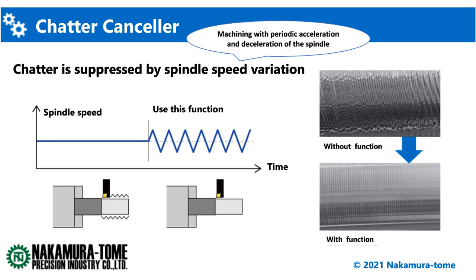Specifically, the spindle speed is increased or decreased. When chattering occurs during machining, we usually adjust the spindle override to avoid it by touching the operation panel. It needs to be done in front of the machine. This function automates such activity by just a simple command.